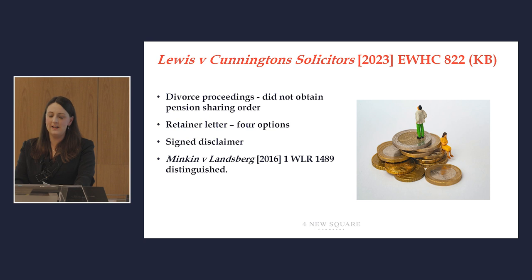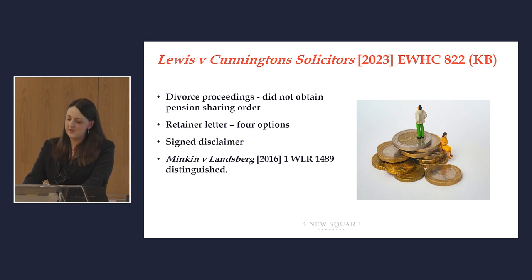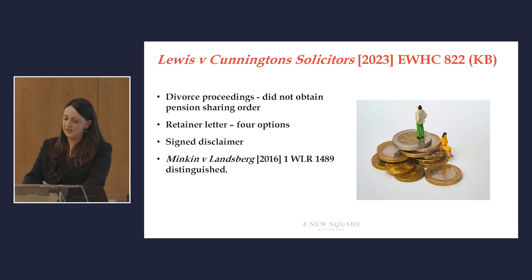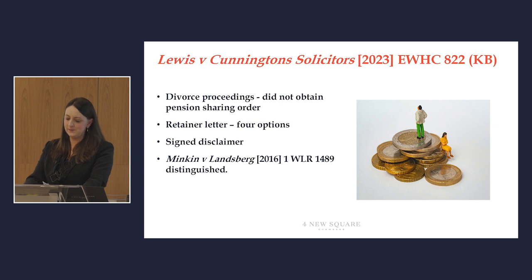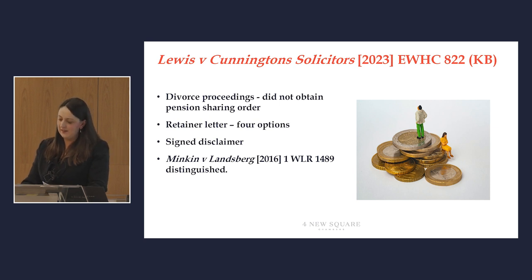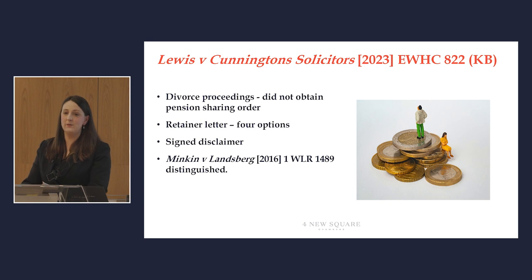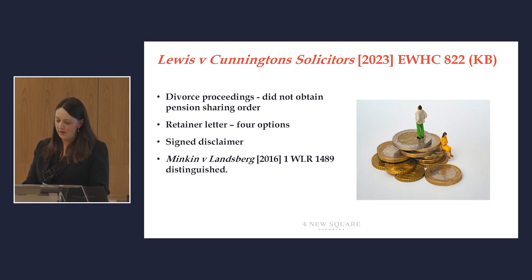The options were: one, direct agreement between the parties themselves; two, mediation; three, collaboration; and four, the traditional court-based route. By a further letter after the initial retainer letter, the solicitors indicated to Mrs Lewis that while she could agree a settlement directly with her former husband — i.e. choose option one — if she did so, the solicitors would not be able to advise her on whether or not the terms of the settlement were fair and reasonable.